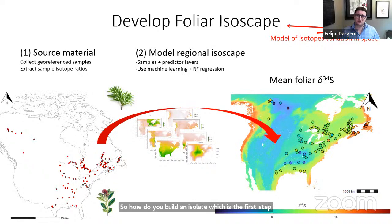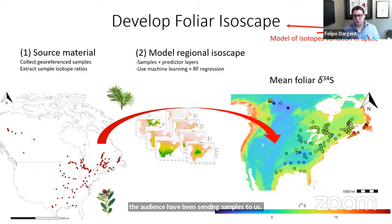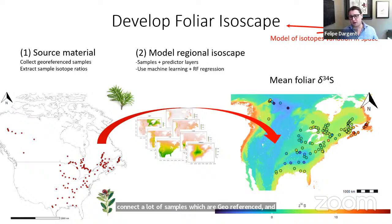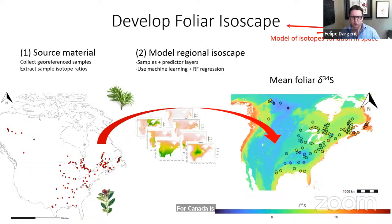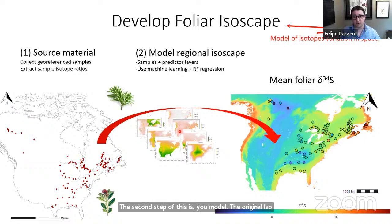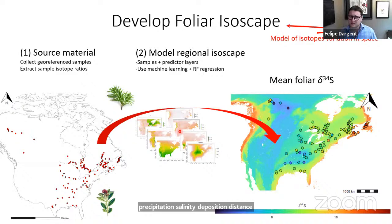How do you build an isoscape? First, we need to collect a lot of samples — and I'm sure several people in the audience have been sending samples to us and have been of major help. You collect a lot of georeferenced samples, then measure the δ34S signal. We collected leaf samples of balsam fir and spruce, complemented with milkweed samples in the USA. For Canada, it's all spruce and balsam fir. The second step is to model the regional isoscape.